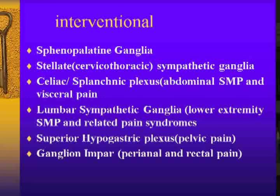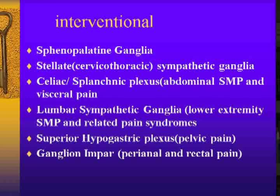Then you have the celiac plexus block, which is mainly very beneficial — and there are many studies supporting this — for pain resulting from pancreatic cancer. It makes a big difference: patients have better quality of pain control and quality of life afterwards. It's best done when the patient is clinically stable. Delaying this block is a concern because one of the biggest risks is bleeding. If they have advanced-stage pancreatic cancer and their PT, PTT, INR, and platelet counts are all off, it will be contraindicated. But if you catch them earlier, they will definitely get good pain relief.